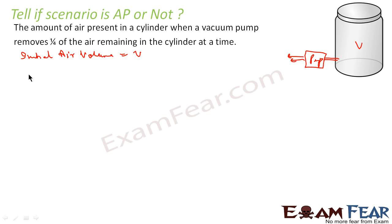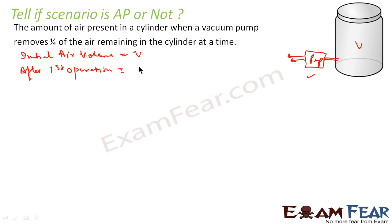After the first operation by the vacuum pump, we switch on the vacuum pump and it removes 1/4th of the air. The volume of air remaining is V into (1 minus 1/4), which is 3/4 of V.